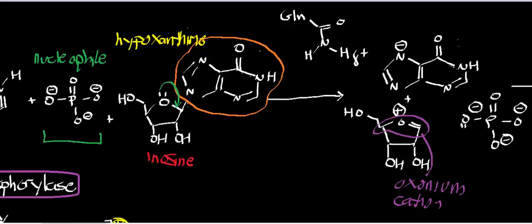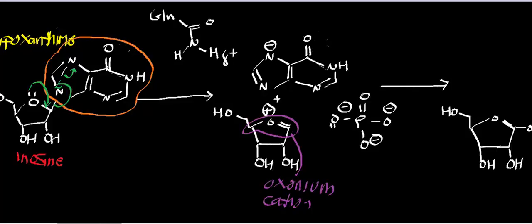Whenever this oxonium ion forms, you get loss of a leaving group. The leaving group essentially is the hypoxanthine moiety. The hypoxanthine moiety is actually stabilized by a glutamine residue in the active site. The amide of glutamine has protons on it with a partial positive charge, and the negative charge that develops on the nitrogen of hypoxanthine can interact electrostatically with that partial charge on the glutamine residue — creating an ion-dipole interaction, or essentially a hydrogen bond.